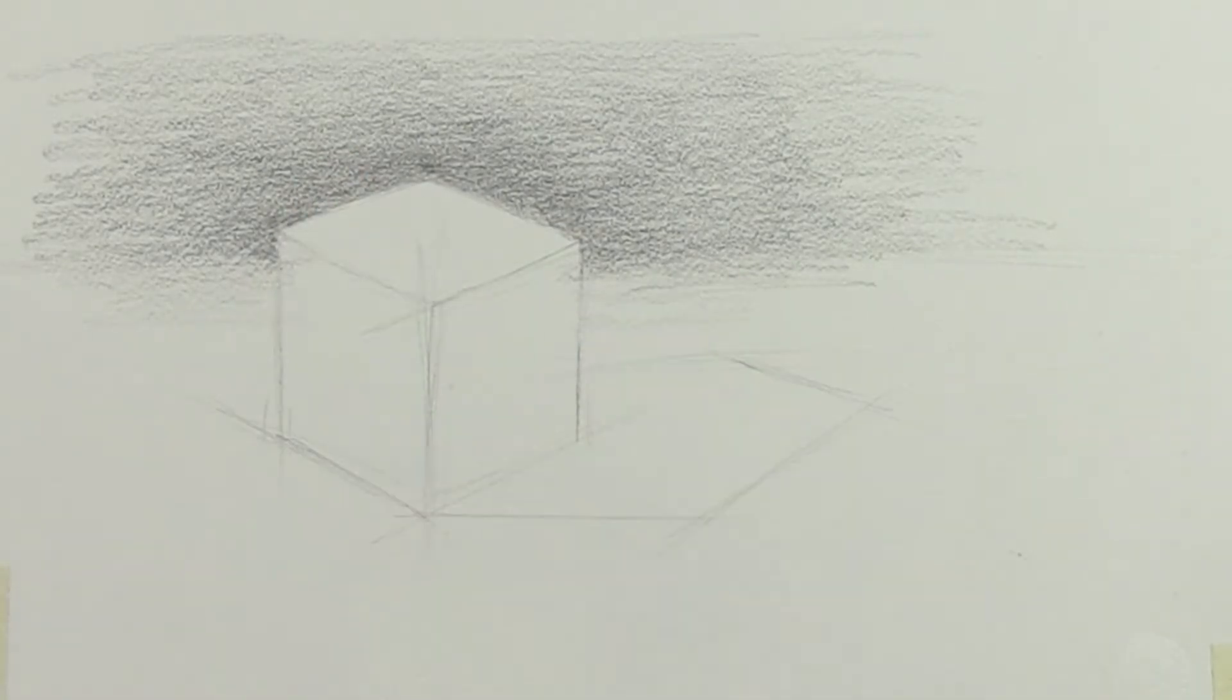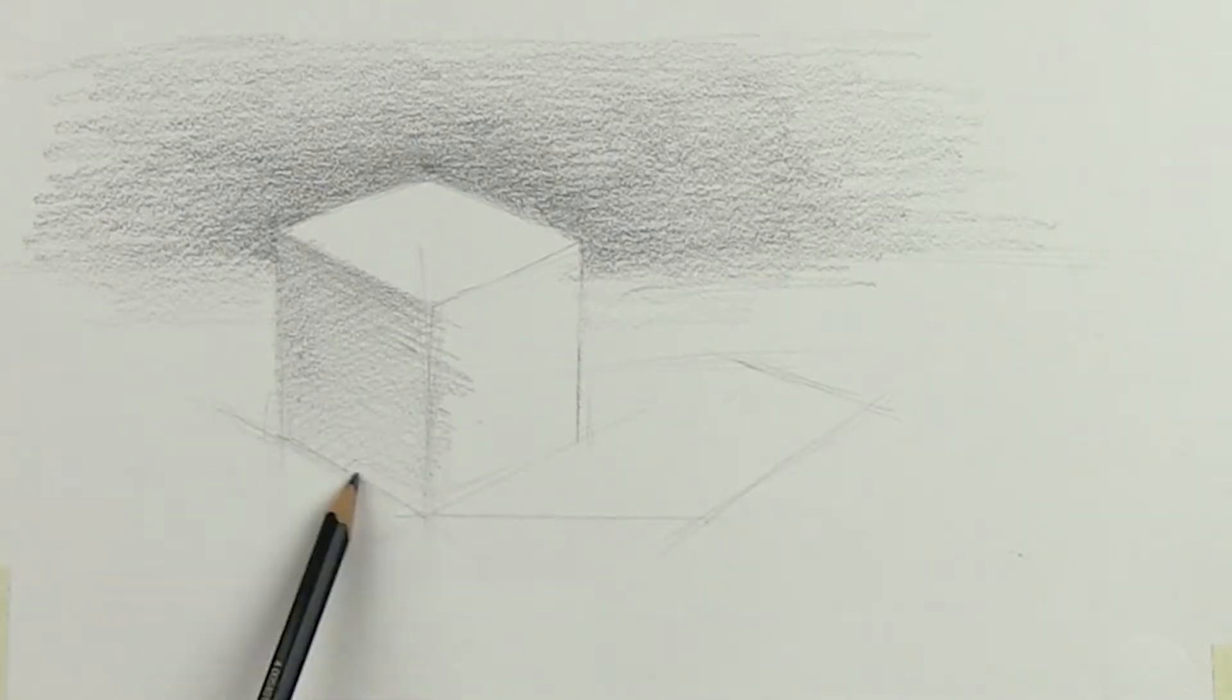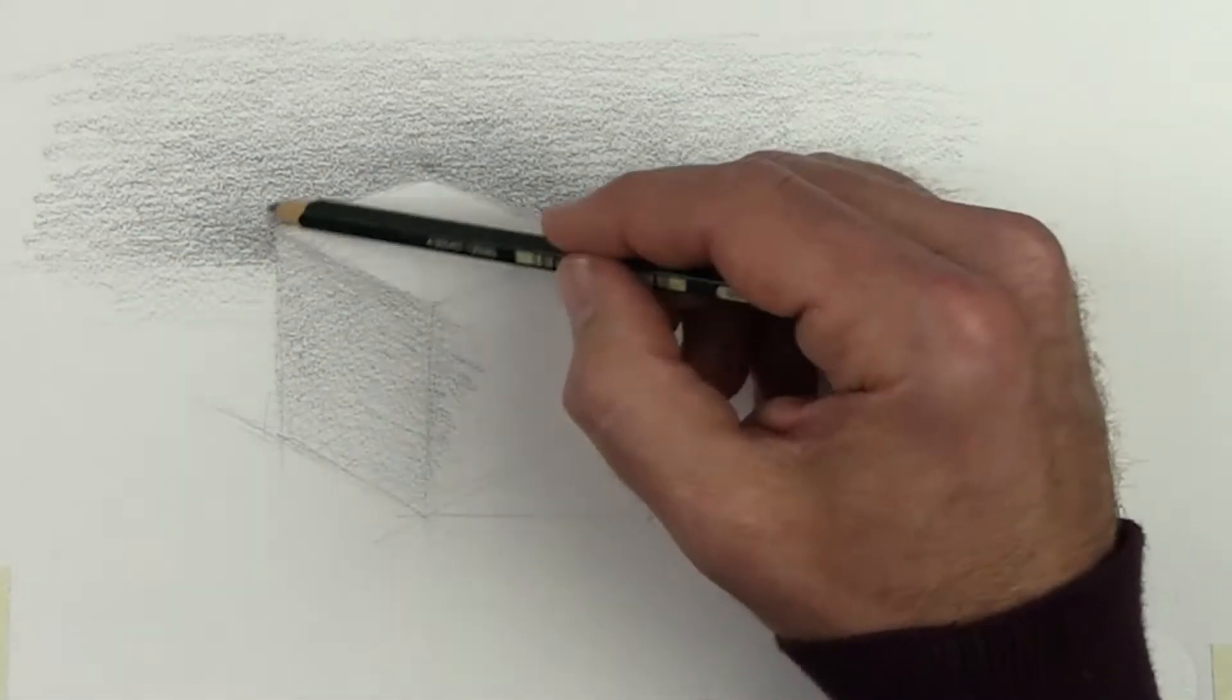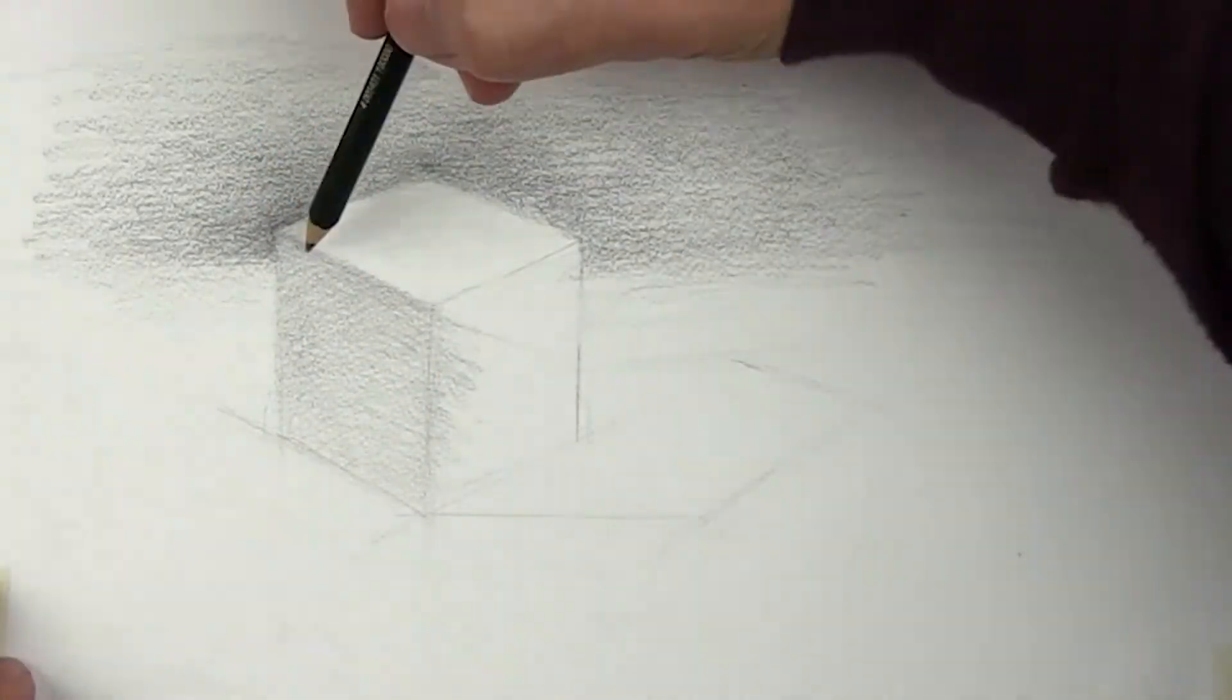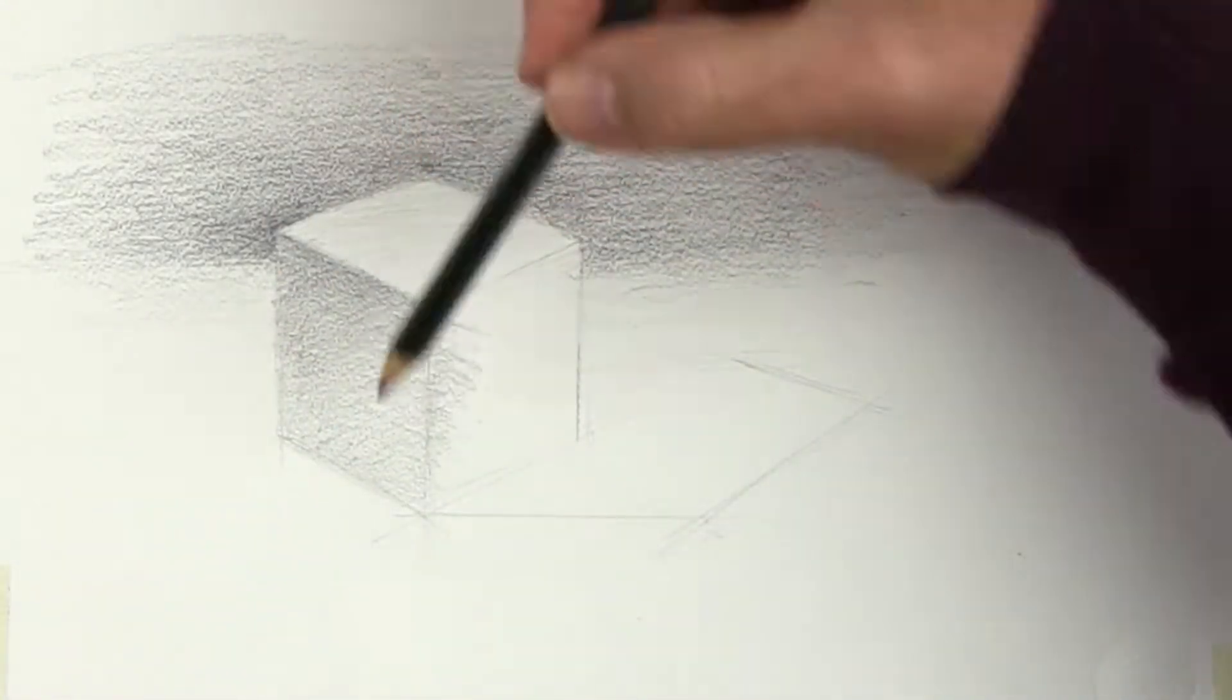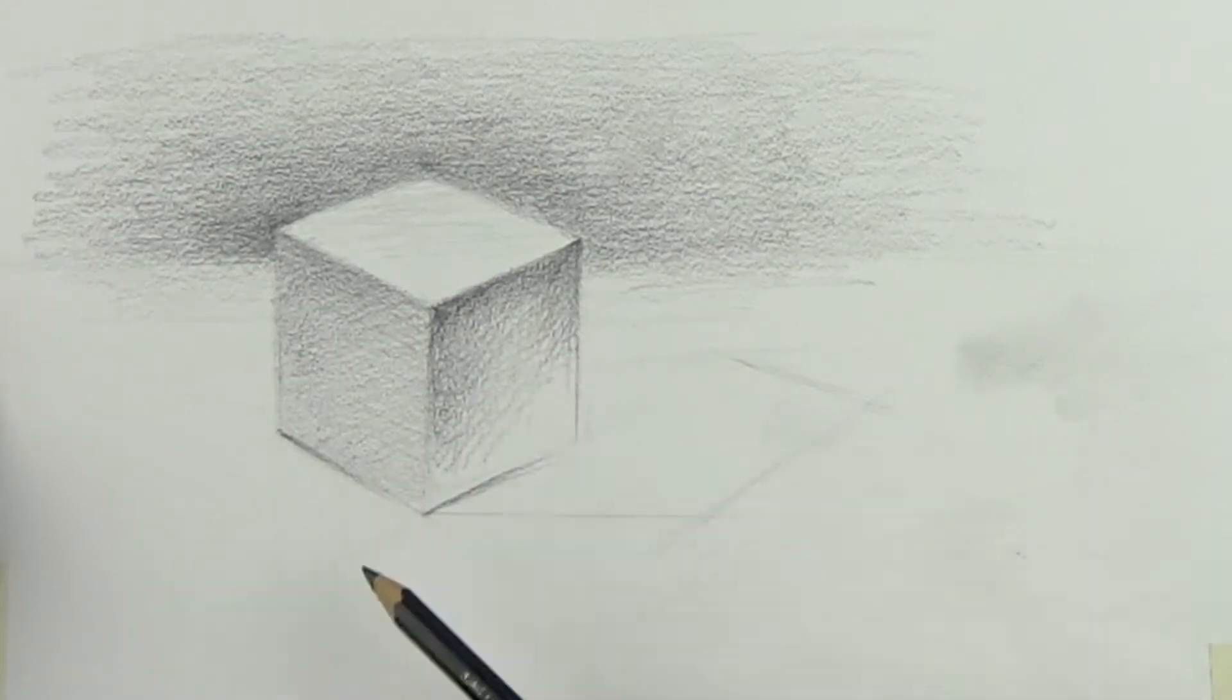Next is the left side of the cube. It's getting some light, but it's less direct than the top, so it will have some value added to it. Last is the right side of the cube. It's facing away from the object and therefore the darkest visible side, so it will receive most of the shading.